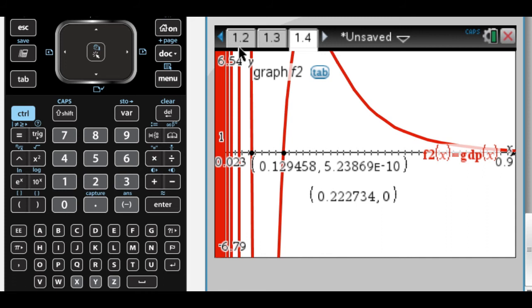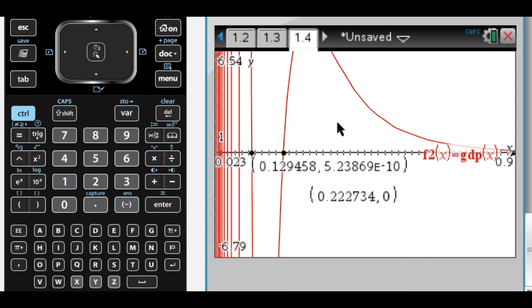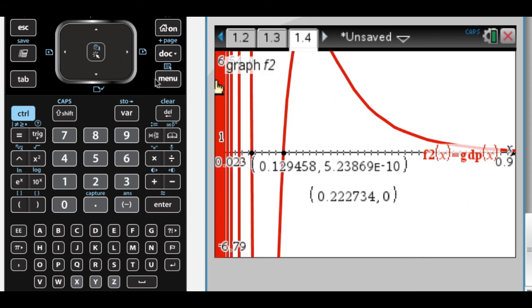All right, so between 0.129 and 0.223 is the answer that we're looking for. And let's move on to part C.